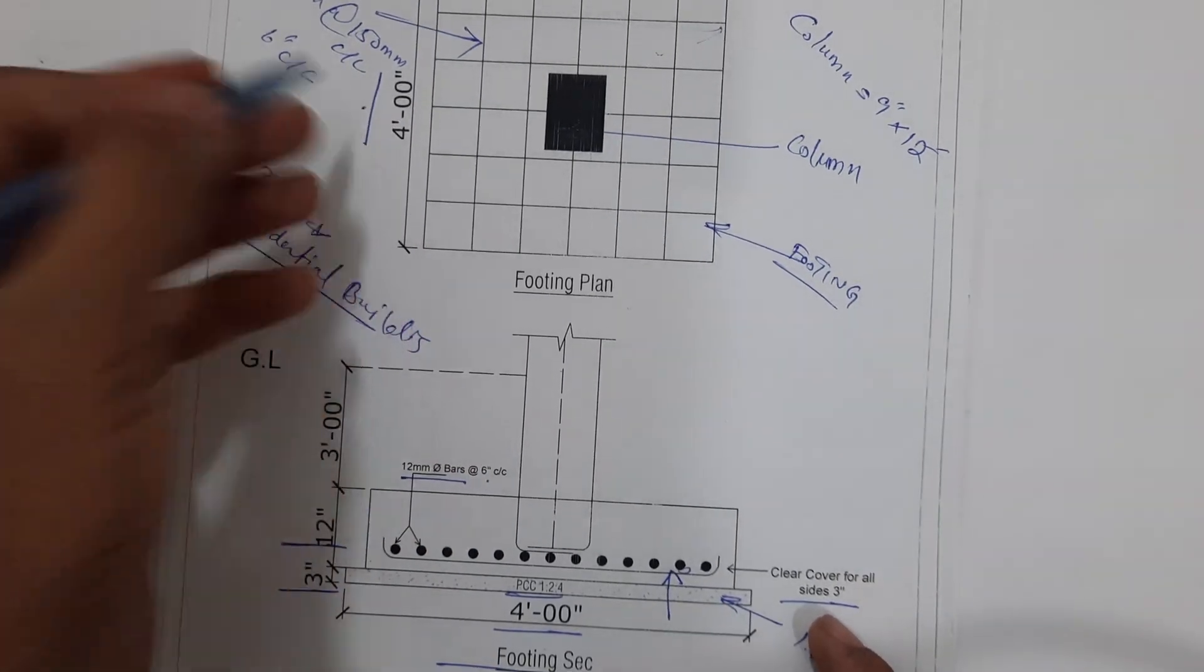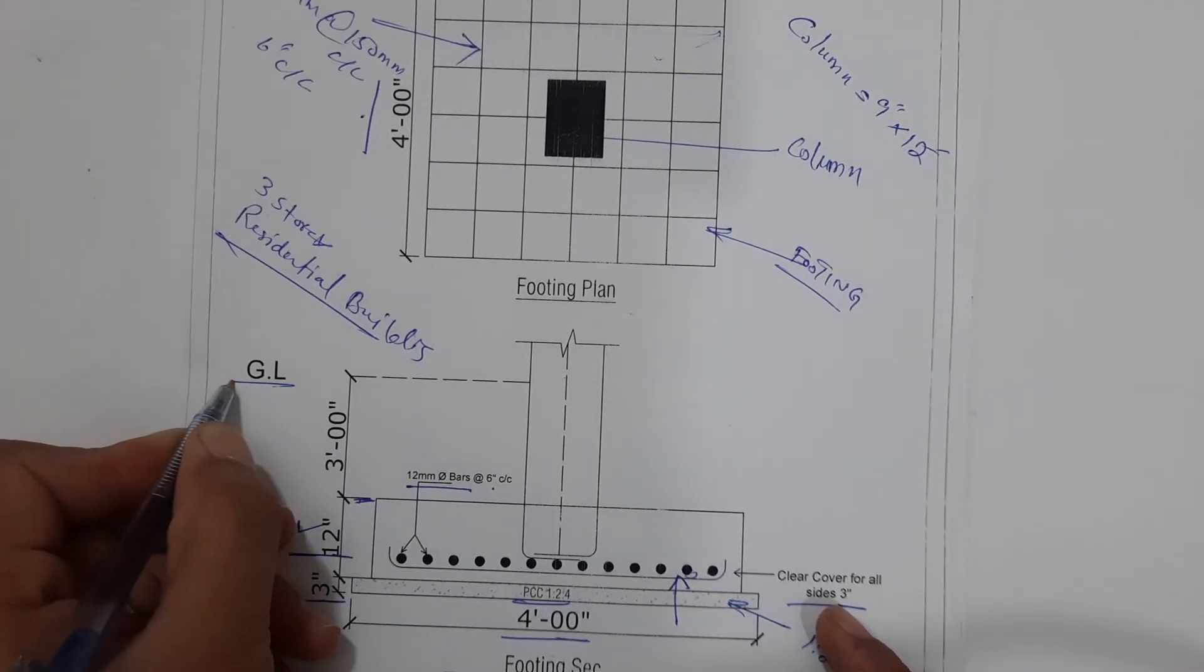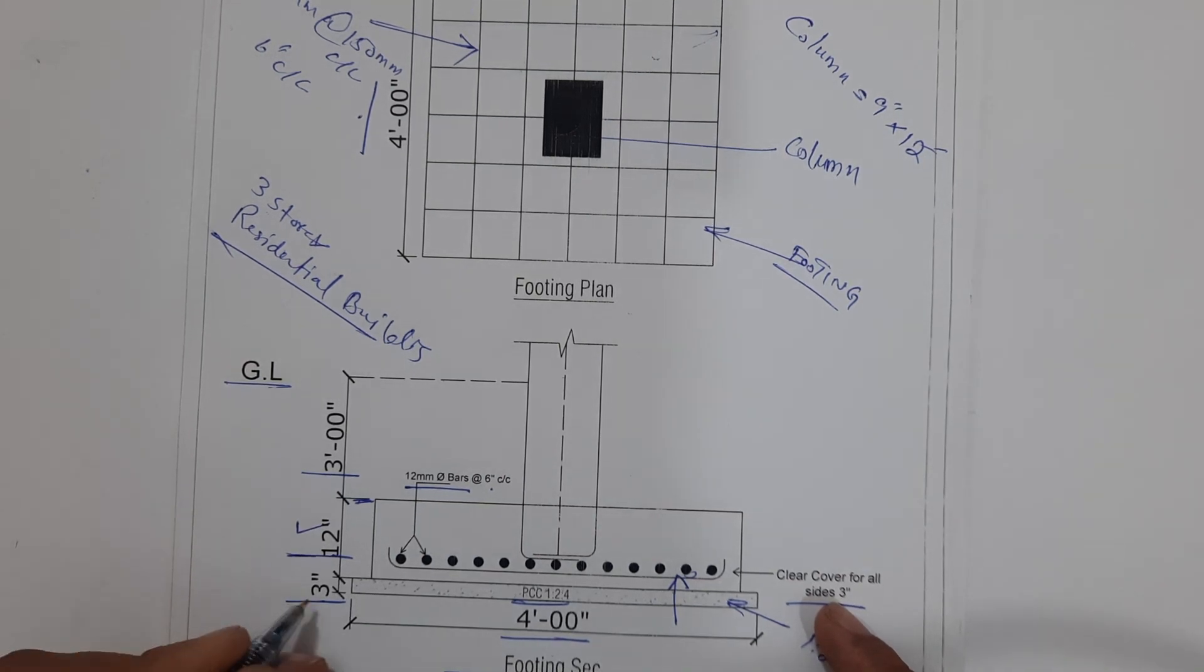From the bed to the ground level GL, we have 3 feet. So total, you can see the depth is here 3 inches plus 12 inches.